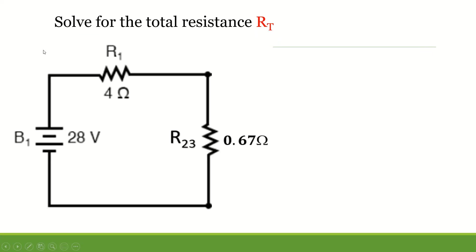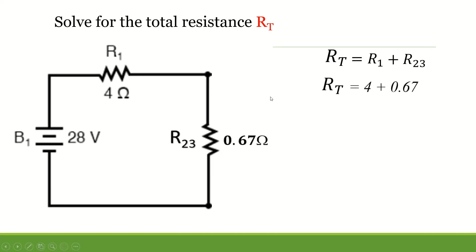The circuit will be reduced so that resistor 1 is in series with the parallel combination of R2 and R3, which is 0.67 ohms. The formula for a series circuit is the sum of the two resistors. So R1 is 4 ohms and R2,3 is 0.67, giving a total of 4.67 ohms.